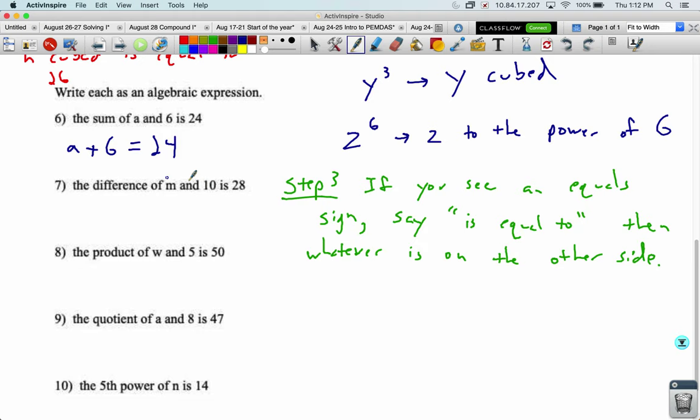The difference of m and ten is 28. So we keep the m and the ten in the same order. Difference means subtraction. Is means an equal sign, 28.